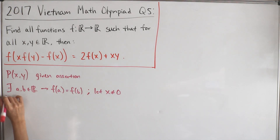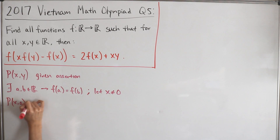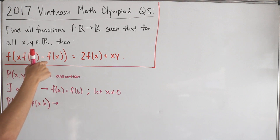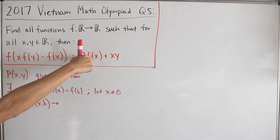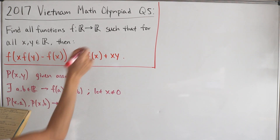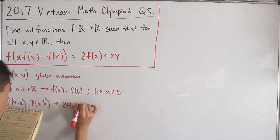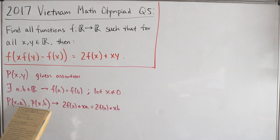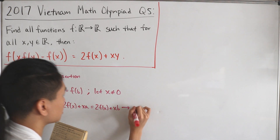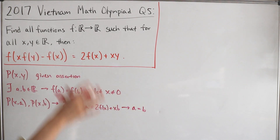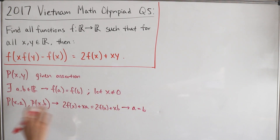For the one-to-one case, using assertions P(x, a) and P(x, b): plugging into the right-hand side gives 2·f(x) + x·a = 2·f(x) + x·b, and solving this we see a = b. Therefore f is indeed a bijective function — surjectivity follows from varying y with x ≠ 0, and injectivity is shown here.